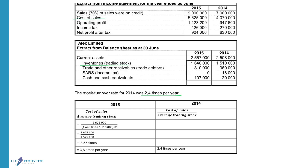The ratio to calculate stock turnover is cost of sales divided by the average trading stock. Cost of sales is given to us as 5,625.